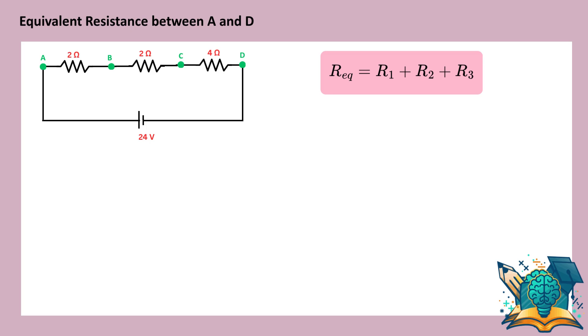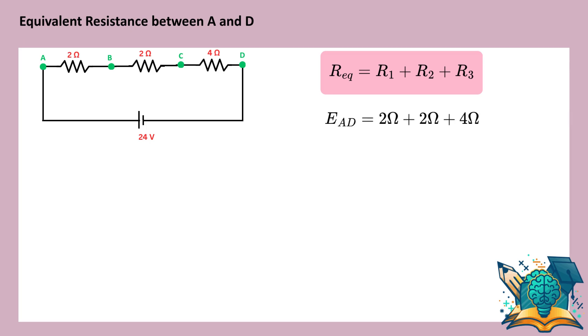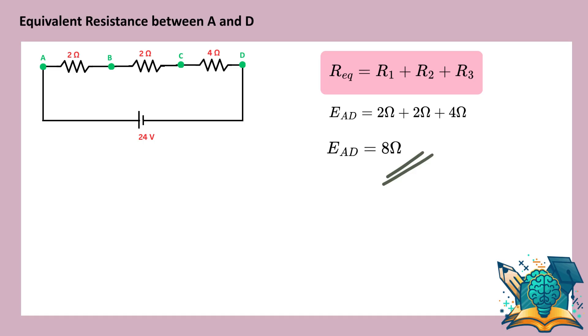After simply adding the resistor values together, we get the equivalent resistance as 8 ohm. Now we can say, the equivalent resistance of the circuit is 8 ohm.